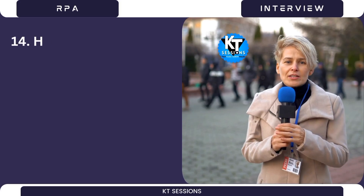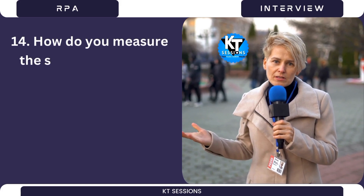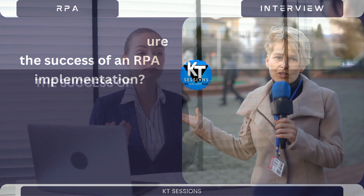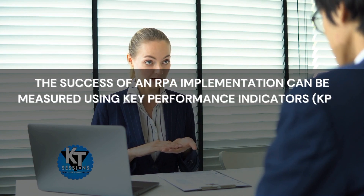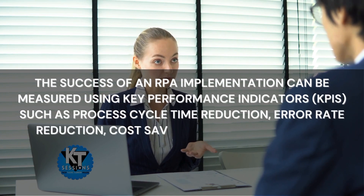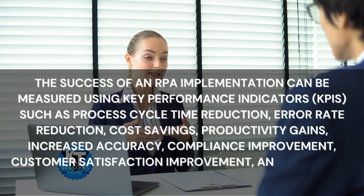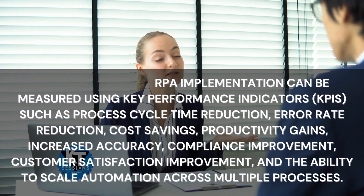Question 14: How do you measure the success of an RPA implementation? The success of an RPA implementation can be measured using key performance indicators (KPIs) such as process cycle time reduction, error rate reduction, cost savings, productivity gains, increased accuracy, compliance improvement, customer satisfaction improvement, and the ability to scale automation across multiple processes.